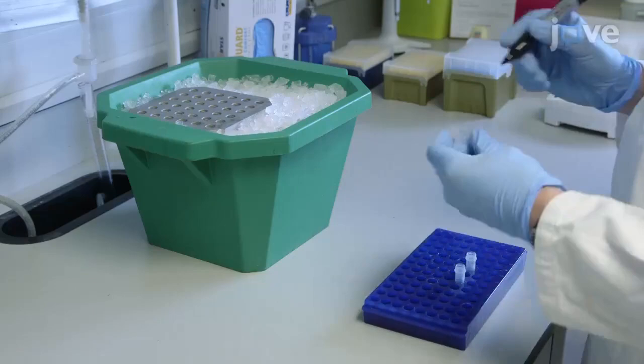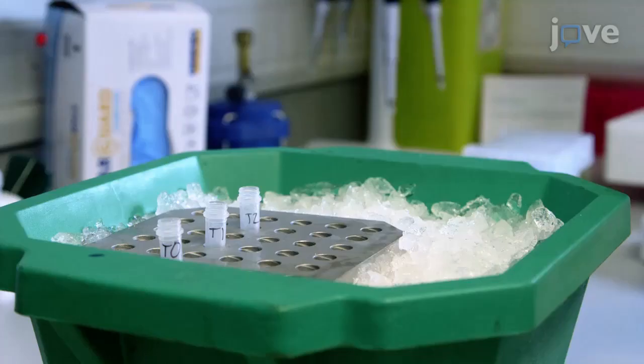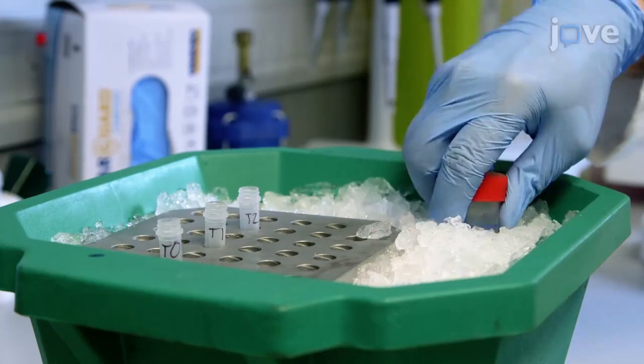Next, label 2 milliliter tubes for long-term storage of the samples and place on ice to cool. Add zirconia beads to the 2 milliliter tubes. Cool at least 1 milliliter of water per sample on ice.